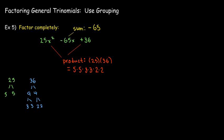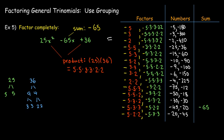25 times 36 is the same as 5 × 5 × 3 × 3 × 2 × 2. By grouping these prime factors in different ways, I can find which grouping gives two numbers whose sum is negative 65. On the face of it, it looks like a huge task — there are many ways to group the factors. But we need both numbers to be negative since the sum is negative and the product is positive.